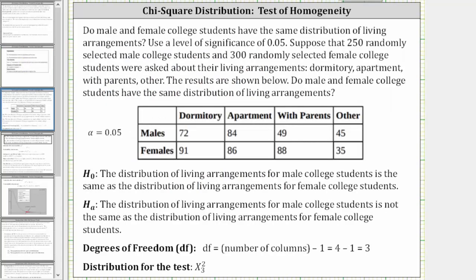Let's take a look at an example. Do male and female college students have the same distribution of living arrangements? Use a level of significance of 0.05. Suppose that 250 randomly selected male college students and 300 randomly selected female college students were asked about their living arrangements: dormitory, apartment, with parents, or other. Because we are testing to see if the distributions are the same, we are performing a test of homogeneity. The null hypothesis is that the distribution of living arrangements for male college students is the same as the distribution for female college students, and the alternative hypothesis is that they are not the same.